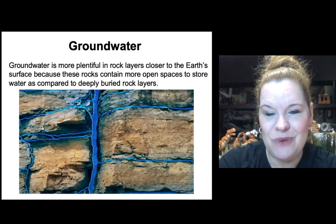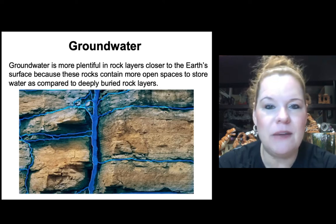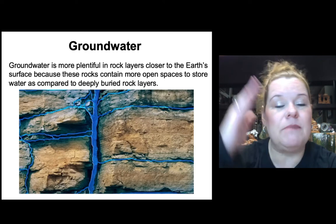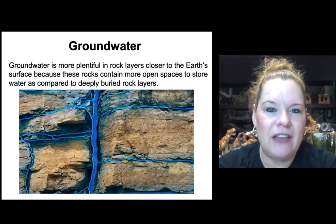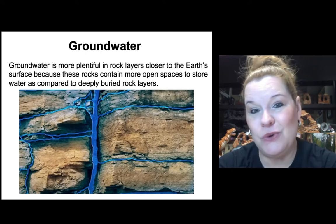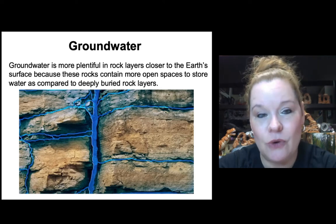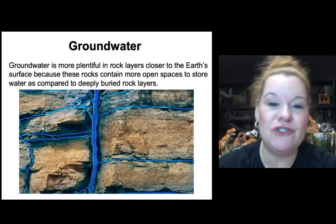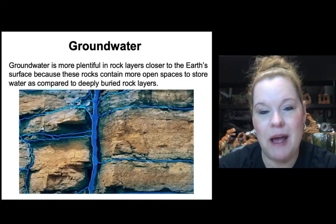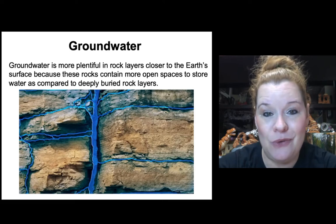Groundwater tends to be more plentiful in rock layers closer to the surface compared to rocks deeply buried under thousands of feet of sedimentary, igneous, or metamorphic rocks. The reason is that less burial means less compaction of pore spaces. Think of it like a trash can — if you stomp on your trash to get more in, you're squeezing out the airspace. That's essentially what happens as rock layers pile on top of each other, squeezing out the spaces that house groundwater in aquifers.